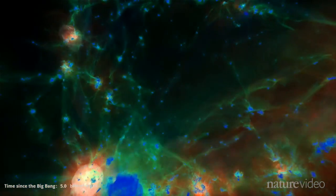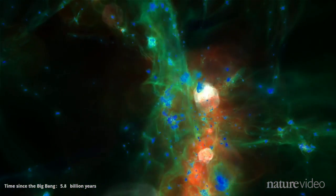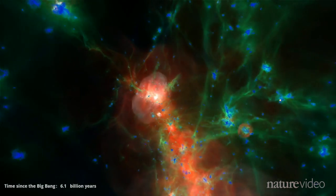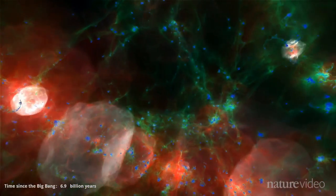Supermassive black holes grow at the center of these. As they gobble up matter, they superheat the material around it, blowing out gas in these violent white bursts. Over time, this enriches the space between galaxies with warm but sparse gas.